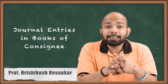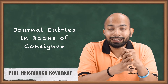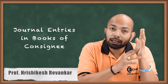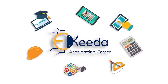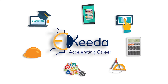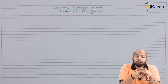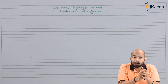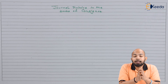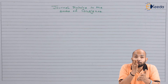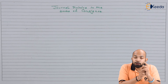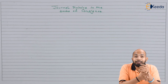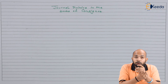Hello friends, we will be discussing the journal entries that are supposed to be passed in the books of the consignee, and we will be understanding the chronological order of it. As we already know the journal entries for the consignor, now we need to understand what are the journal entries to pass for the consignee accounts. We will be jotting down each and every journal entry in chronological order.